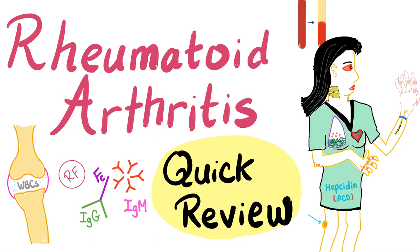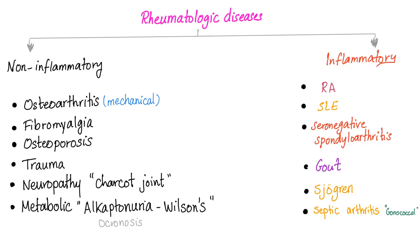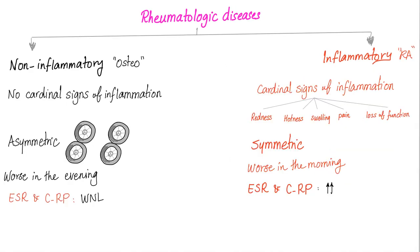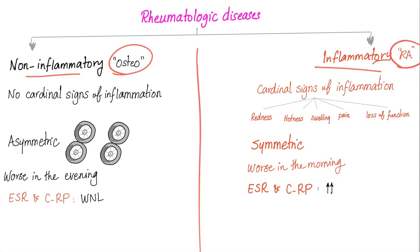I've talked about rheumatoid arthritis in more than 15 videos, so if you need anything go to the previous videos. Before you learn anything about rheumatoid, you have to know that we divide rheumatological disease into non-inflammatory and inflammatory. Rheumatoid is an inflammatory arthritis. The difference between non-inflammatory such as osteoarthritis and inflammatory such as rheumatoid is imperative.